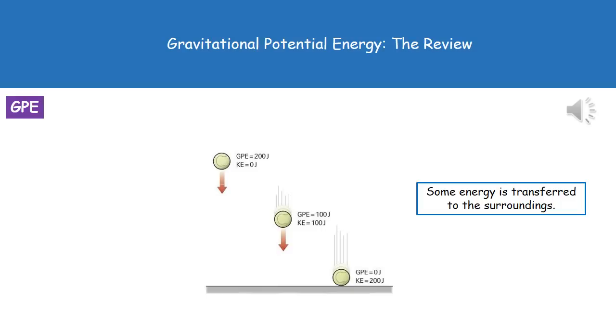As the ball hits the floor, we've got no gravitational potential energy. It's all kinetic. We've got 200 joules of kinetic energy and zero GPE.